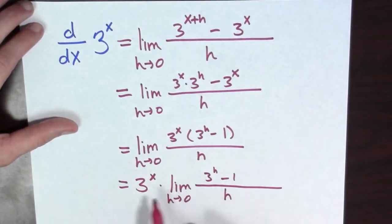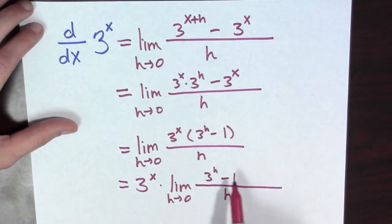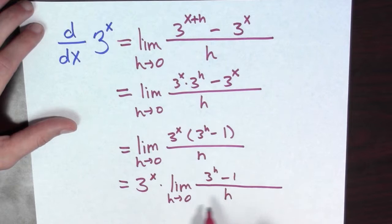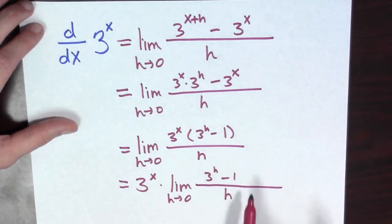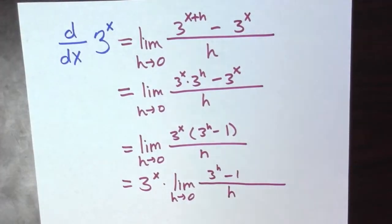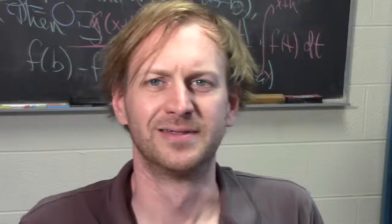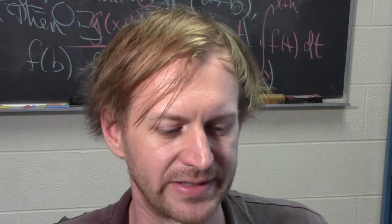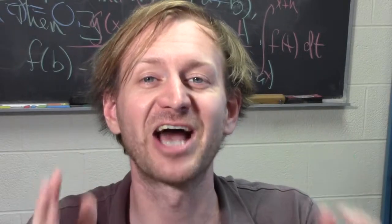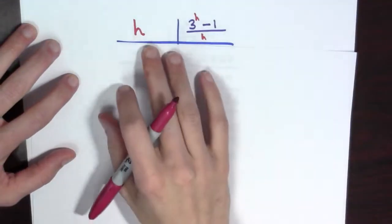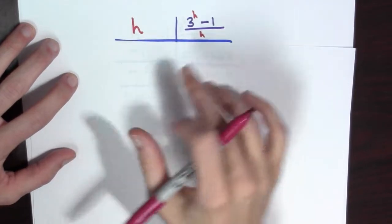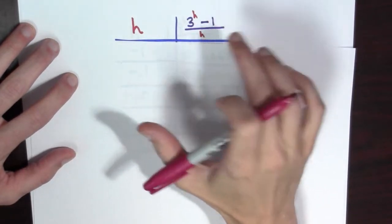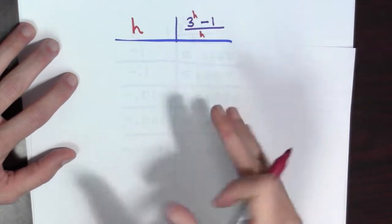This is really wild — here I have the original function times what looks to be a constant, assuming this limit exists, since there are no x's in this factor. That's kind of strange. It's another limit that seems hard. Let's make another table: h on the left and (3 to the h minus 1) all over h on the right, investigating what happens as h goes to 0.